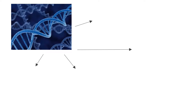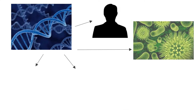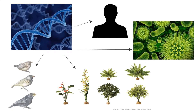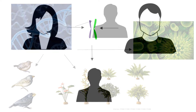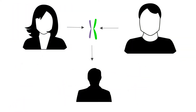DNA tells the organism what to become. You, bacteria, plants, and Darwin's finches all contain specific DNA. Your DNA is a combination of each of your parents' DNA.